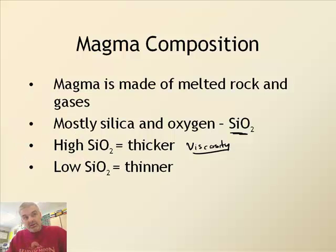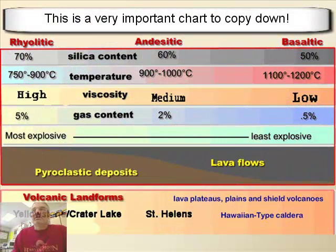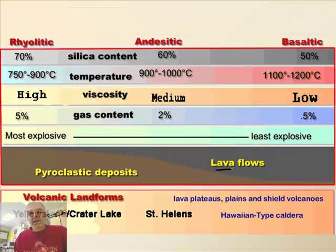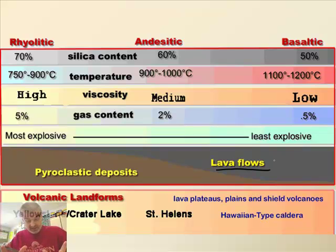If the magma is thick, it has high amounts of silicon dioxide, and if it's thinner, it has low silicon dioxide. You'll need to copy down this chart. When you have a lava flow, the lava itself tends to be thinner in consistency.